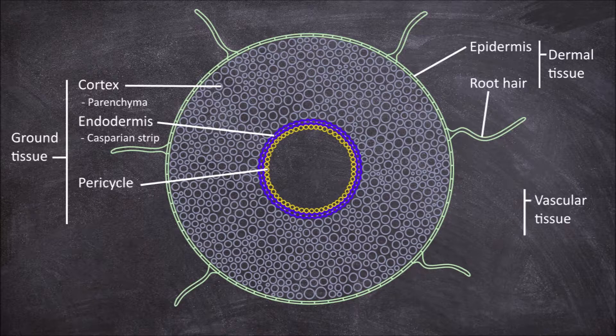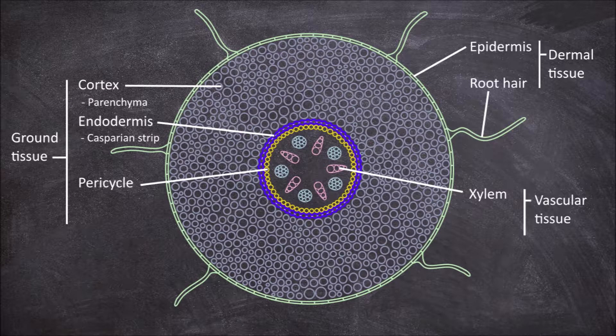The vascular tissue consists of an alternating pattern of the xylem and the phloem. The xylem is involved in the transport of water from the roots to the stems whilst the phloem is involved in the movement of the food products made in the leaves down through the rest of the plant.